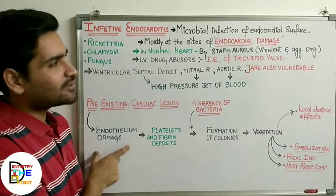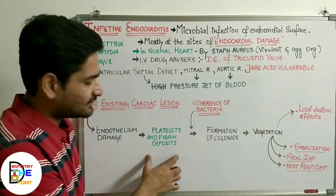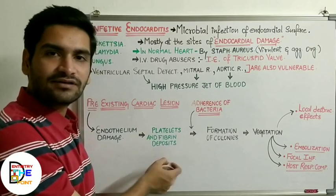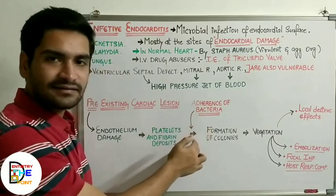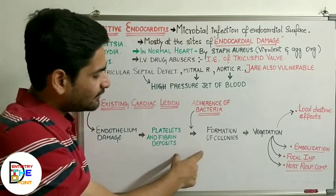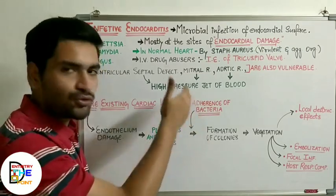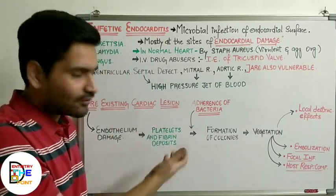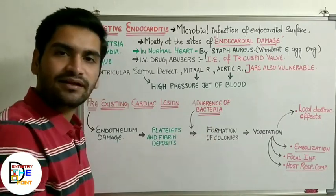At the site of endocardial damage, there will be aggregation of platelets and fibrin. Bacteria and various organisms then get a chance to accumulate over that area. Once platelets and fibrin deposits have accumulated, bacteria come to that site and get added at the position of endothelium or endocardial damage. They then start forming their colonies.